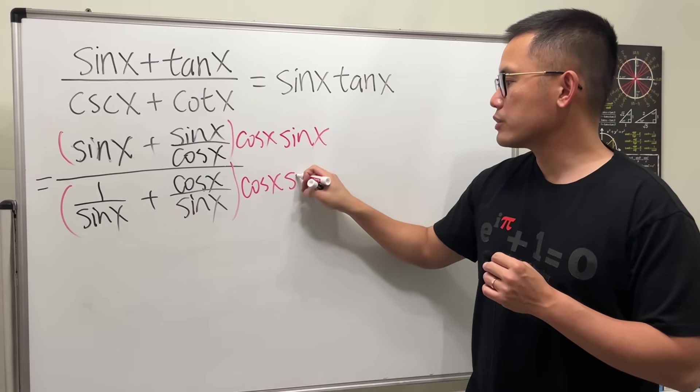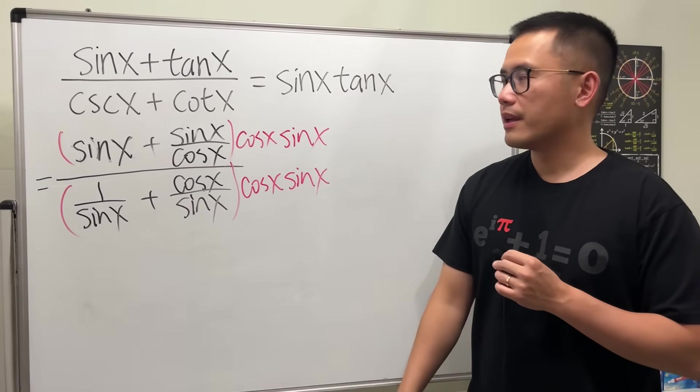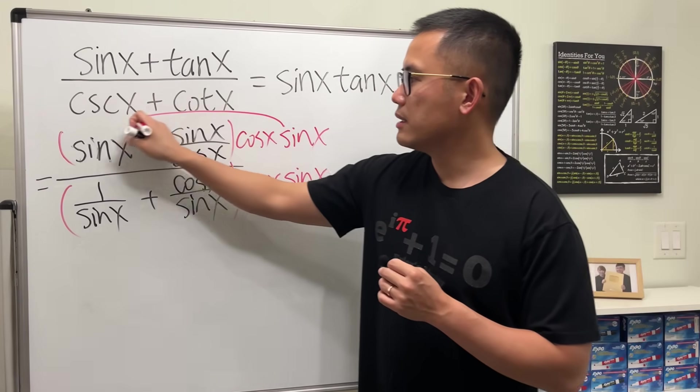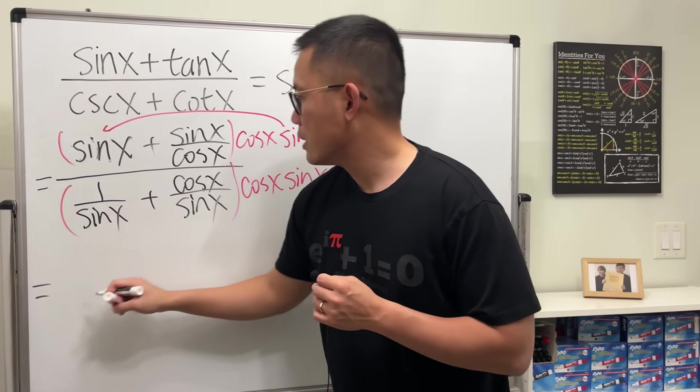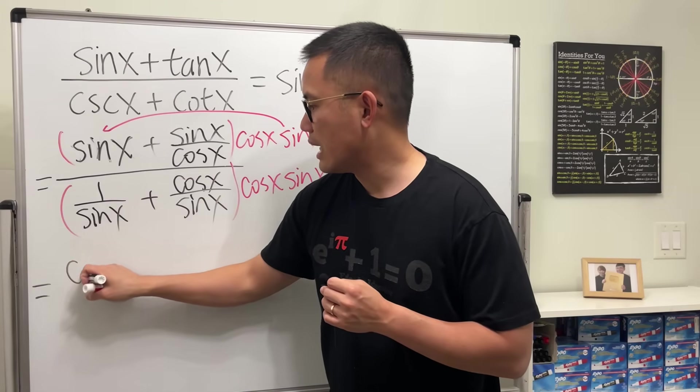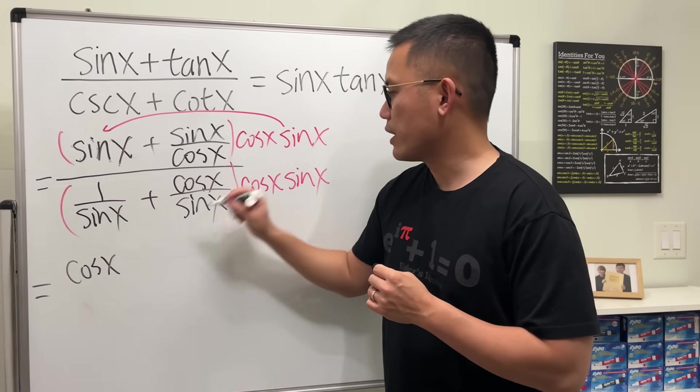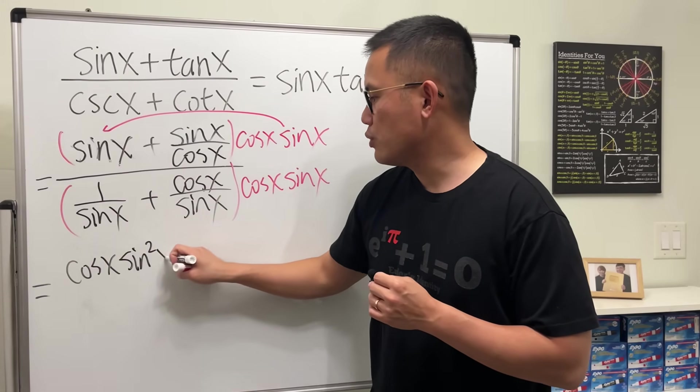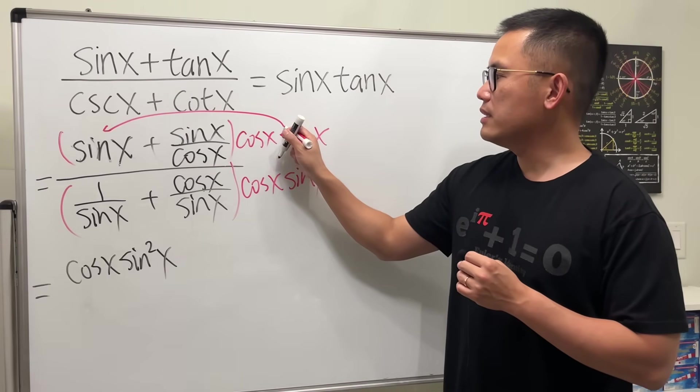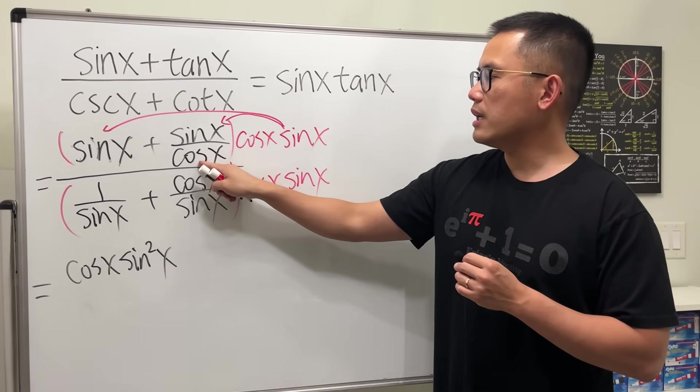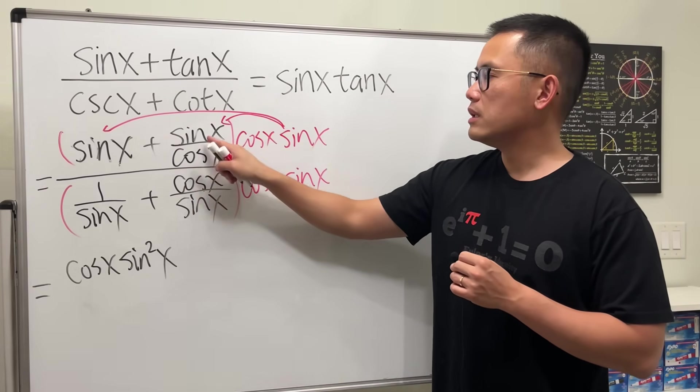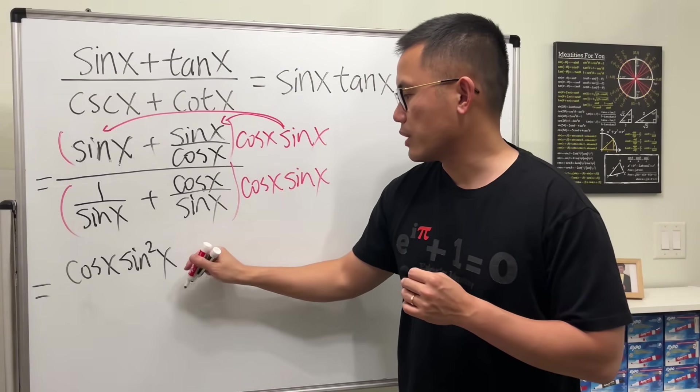Now, take this and multiply. Cosine x stays, and we have sine squared x. Next, take this and multiply with this—cosine x cancels, and sine x times sine x is sine squared x.